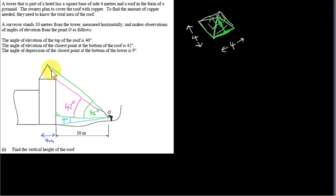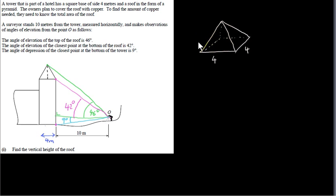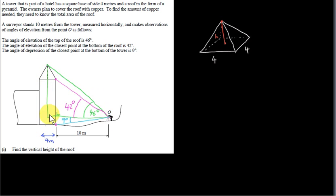We want to find the vertical height of the roof — the distance from the apex of the pyramid down to the center of the square base, found by intersecting the two diagonals of the square. To find this, we look at the green right-angle triangle whose hypotenuse extends from the observer to the top of the roof. We construct this triangle inside the tower; the hypotenuse is the distance from O to the top of the tower.